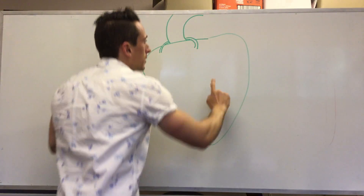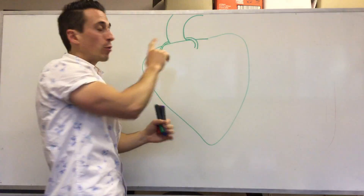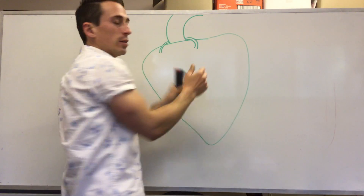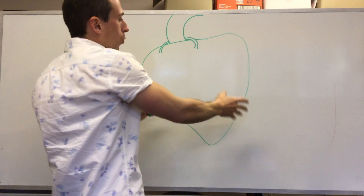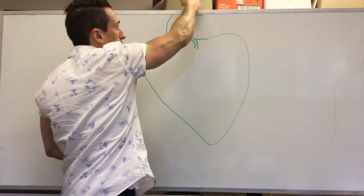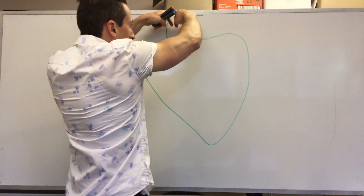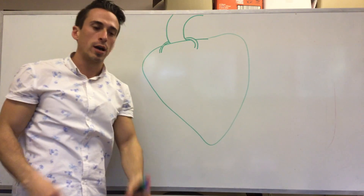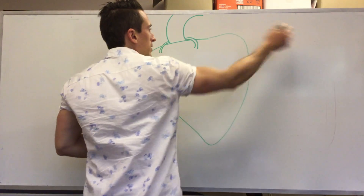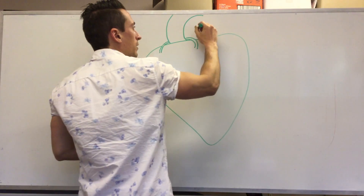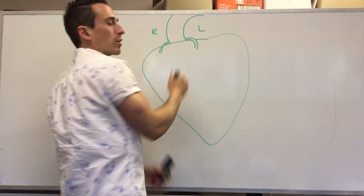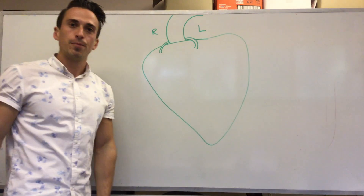When the left ventricle contracts and pushes blood up into the aorta, that is not when the coronary arteries fill. In actual fact, when the heart relaxes in diastole and blood wants to come back down, that is when blood moves into the coronary arteries. You can see the left coronary artery on the left side of the heart and the right coronary artery on the right.